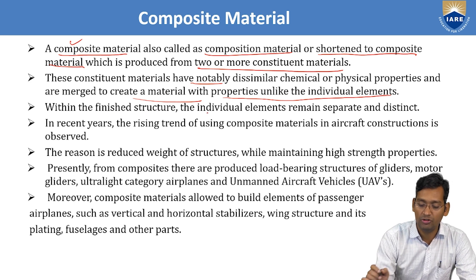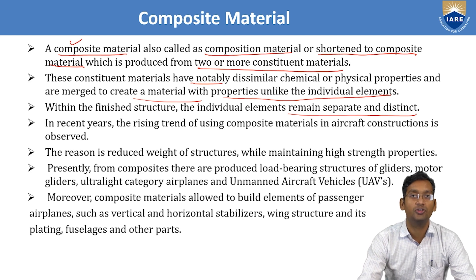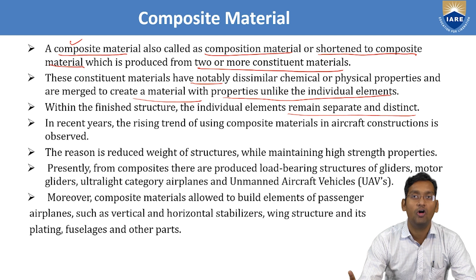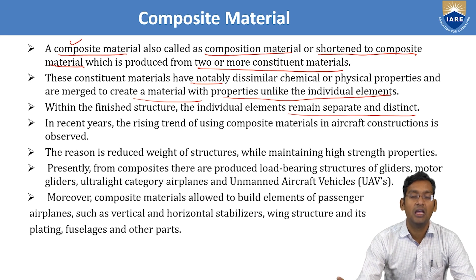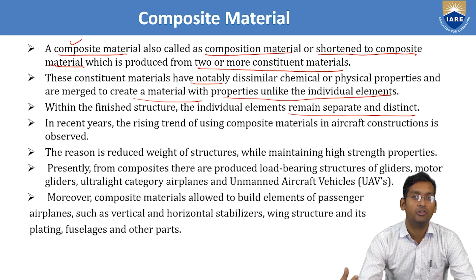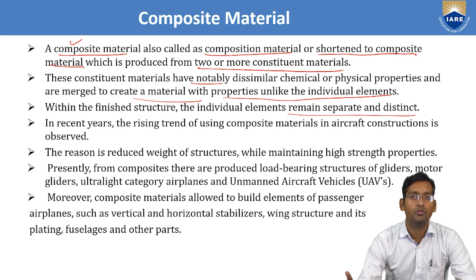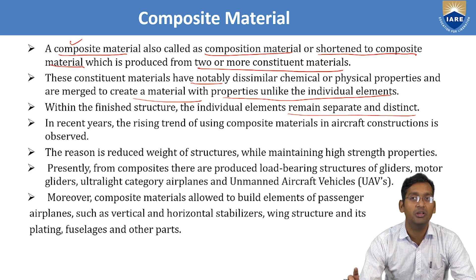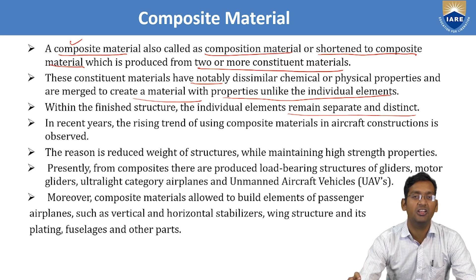Within the finished structure, the individual elements remain separate and distinct. Unlike an alloy — where materials like magnesium or zinc are mixed throughout at very small proportions (0.001–0.002%) and cannot be separately identified — in a composite, each material must be distinct and can be found separately.